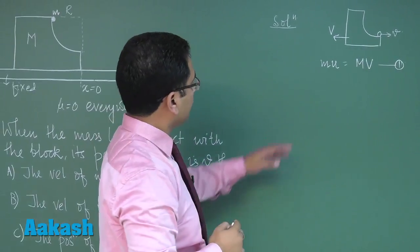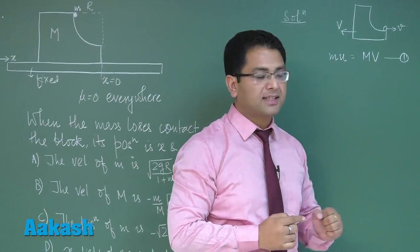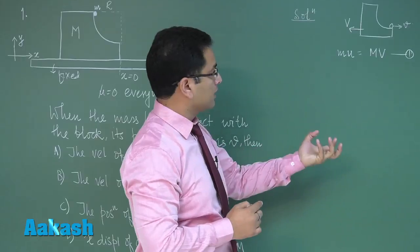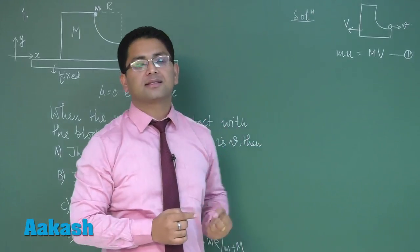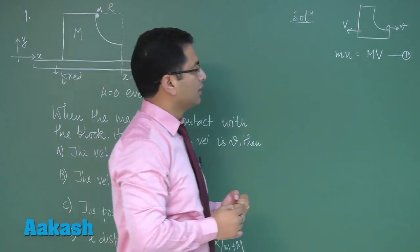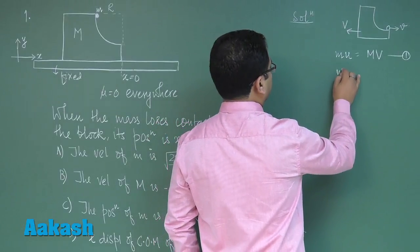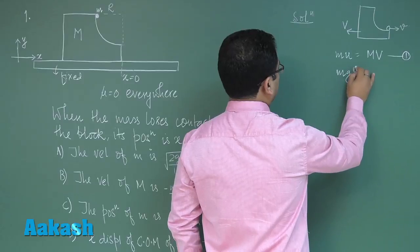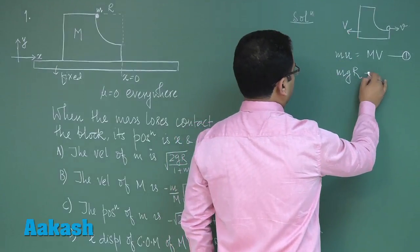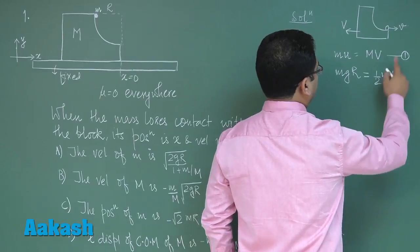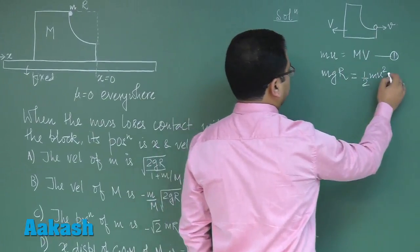However one equation will not suffice because we are having two variables so we have to rope in another tool and that is the conservation of energy tool. Right here mechanical energy is conserved so I can very straightforward write mg capital R. The fall in gravitational potential energy would provide the kinetic energy for the particle and the block.